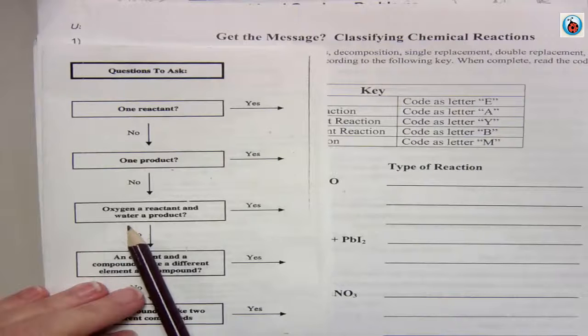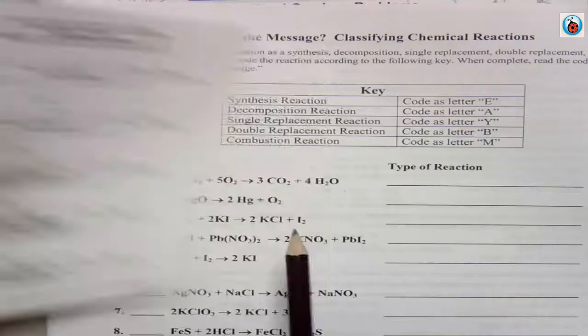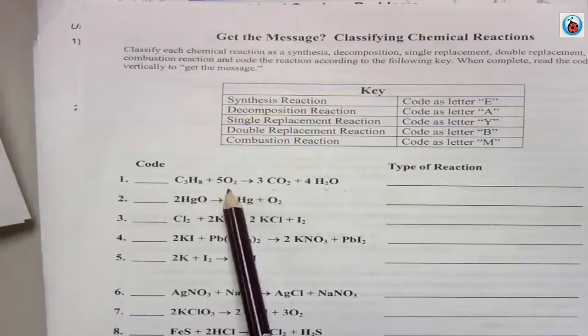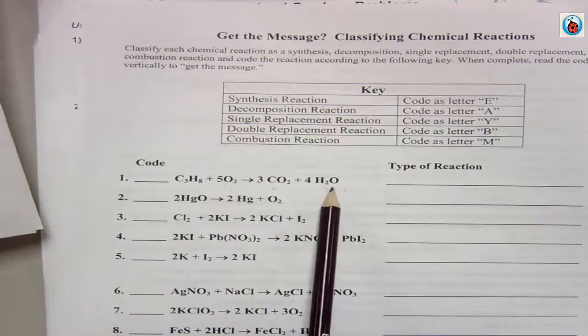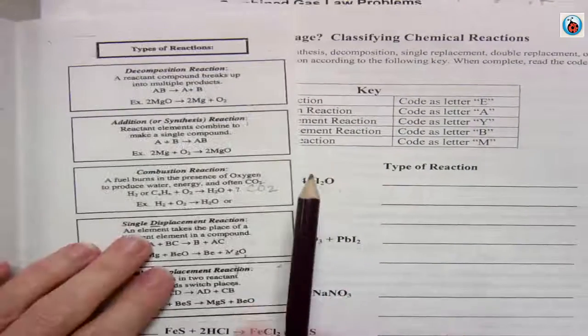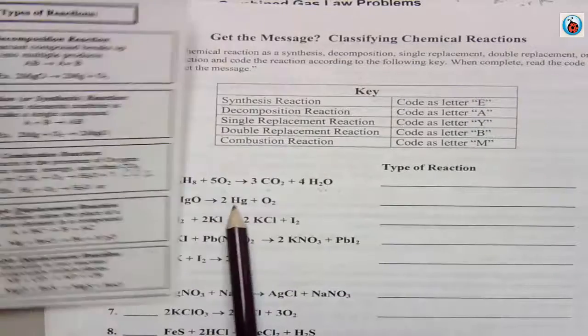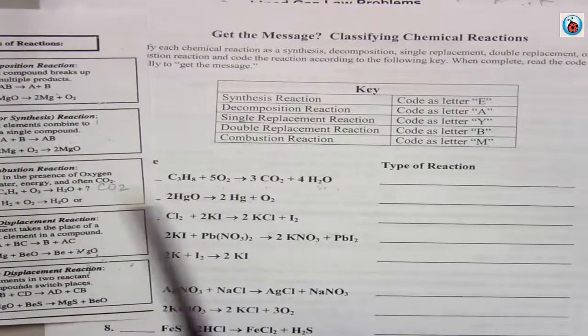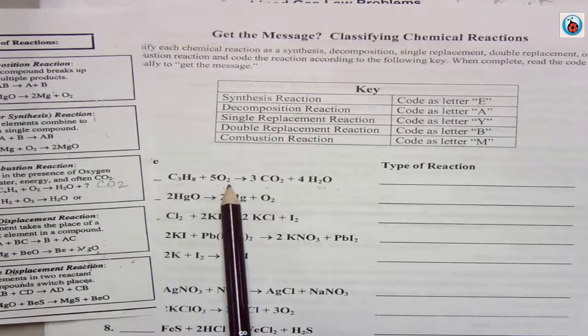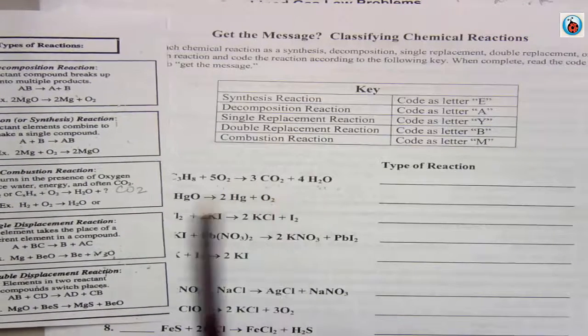Is oxygen a reactant and water a product? Oxygen is a reactant. Water is a product. Let's see. Yes. Let's go over here. Do we have fuel? C to the X, H to the X, plus oxygen produces CO2 and water. Oh, yep,